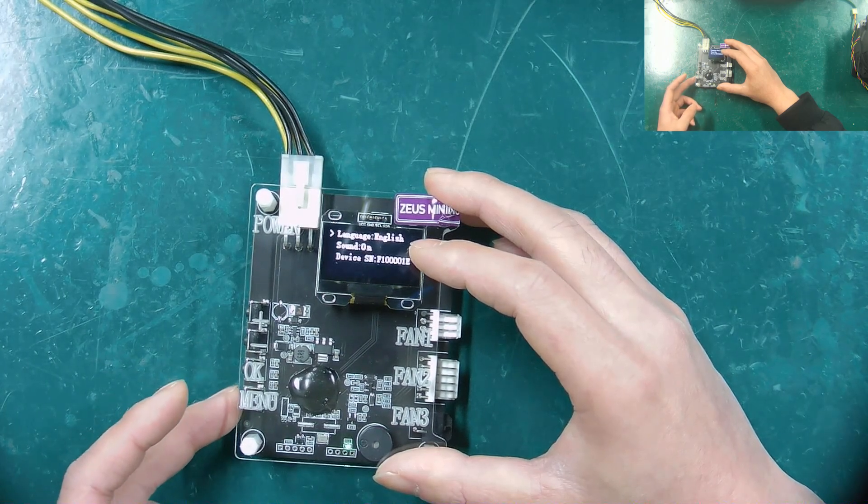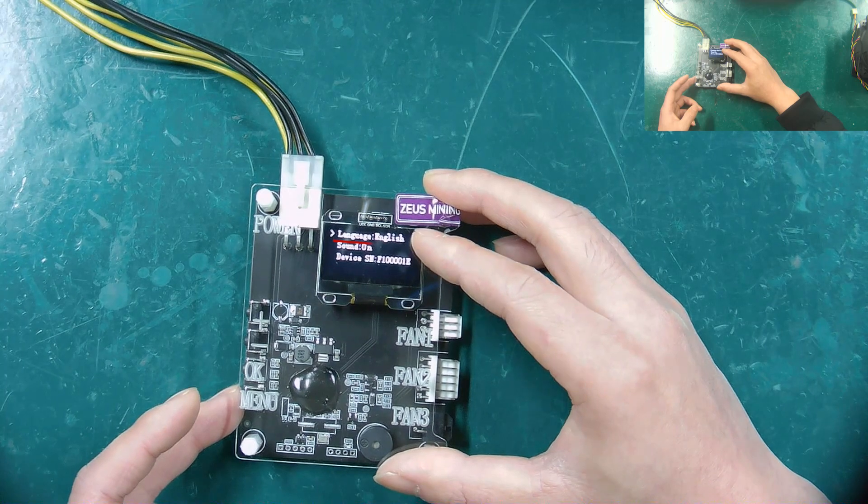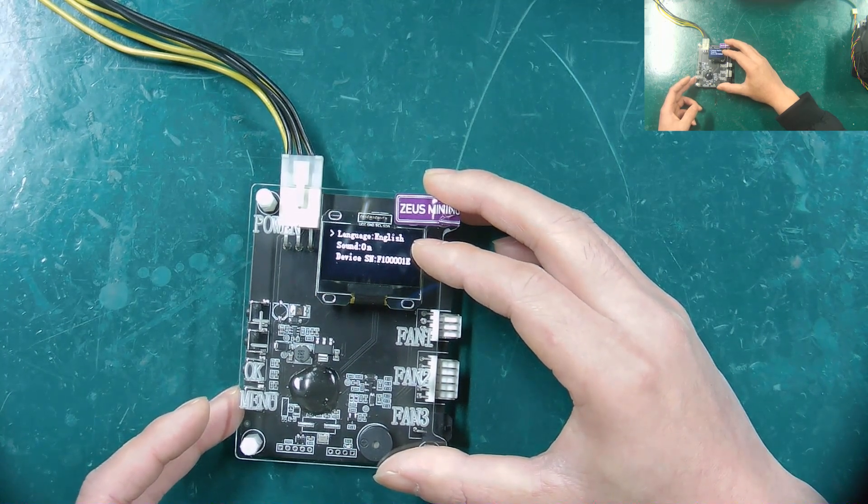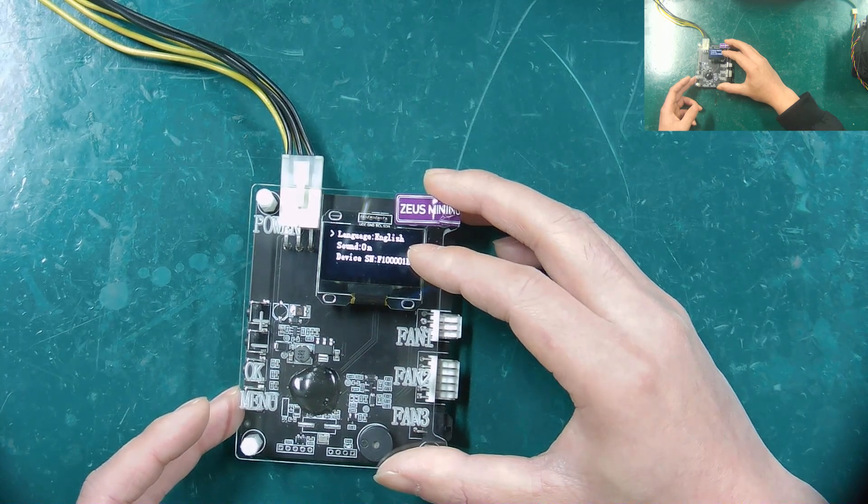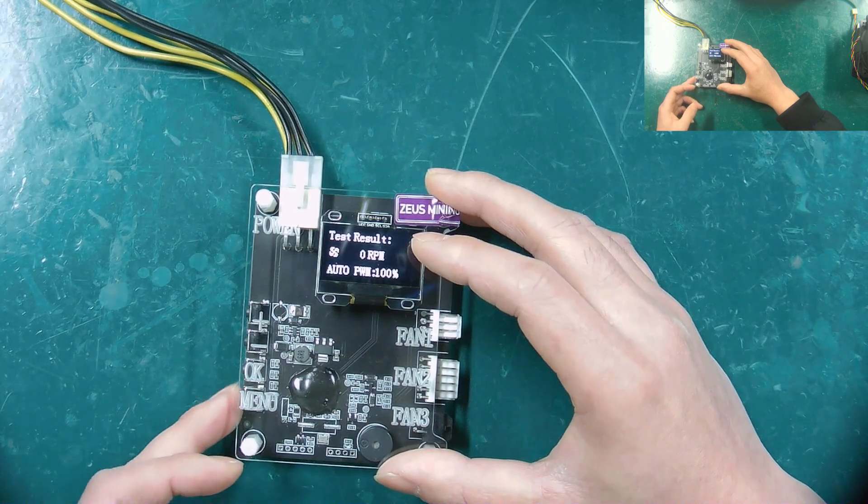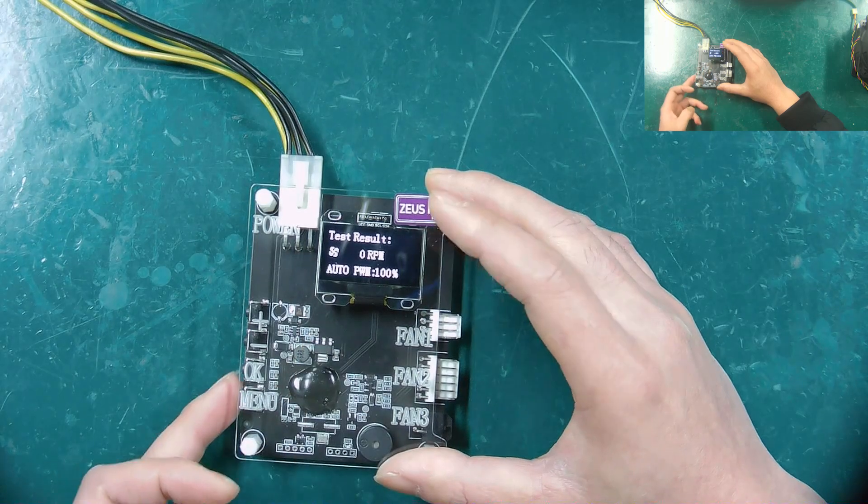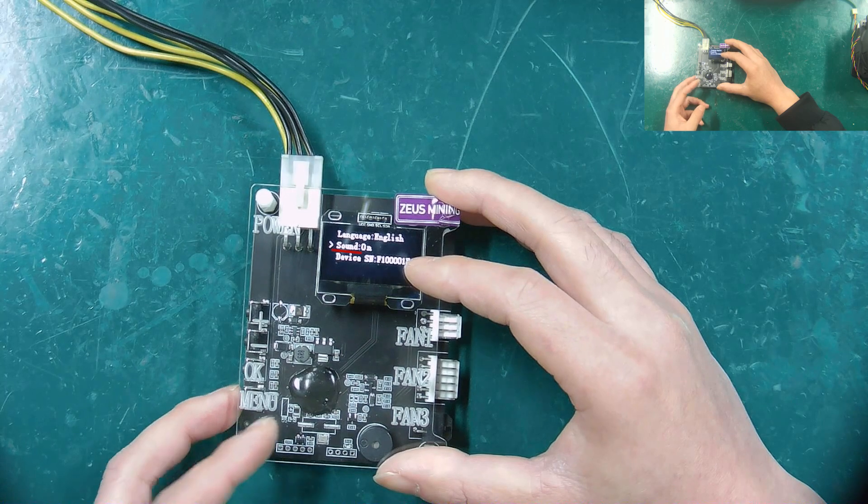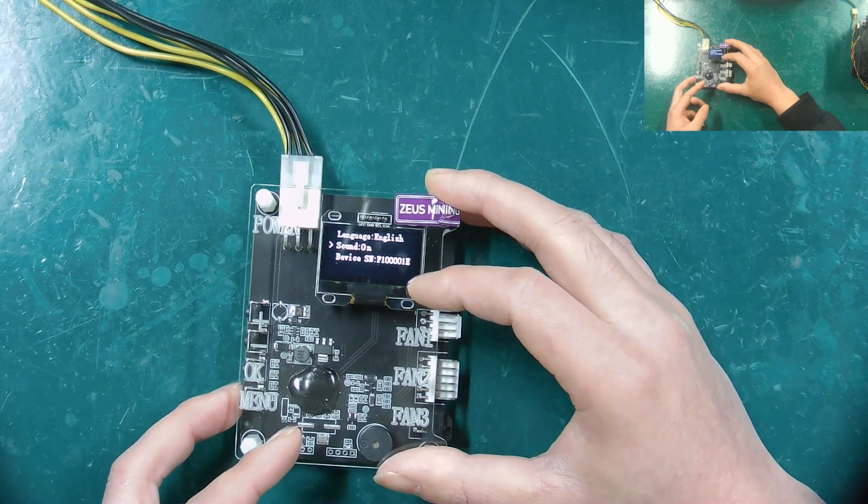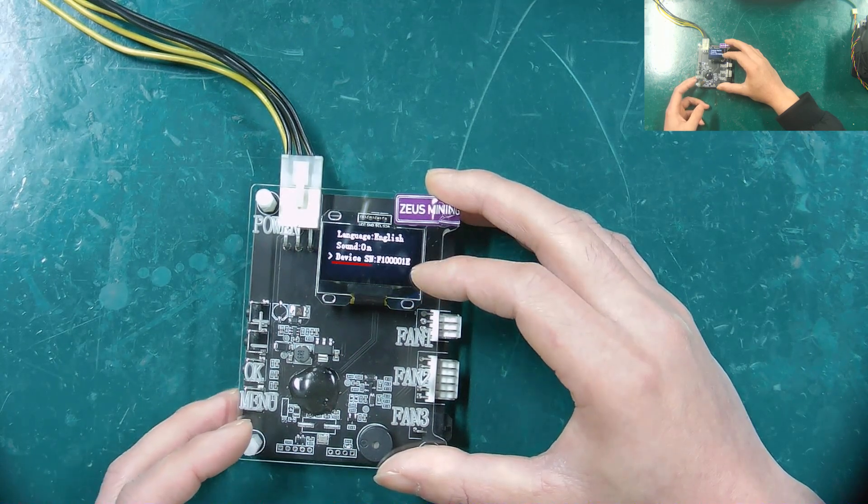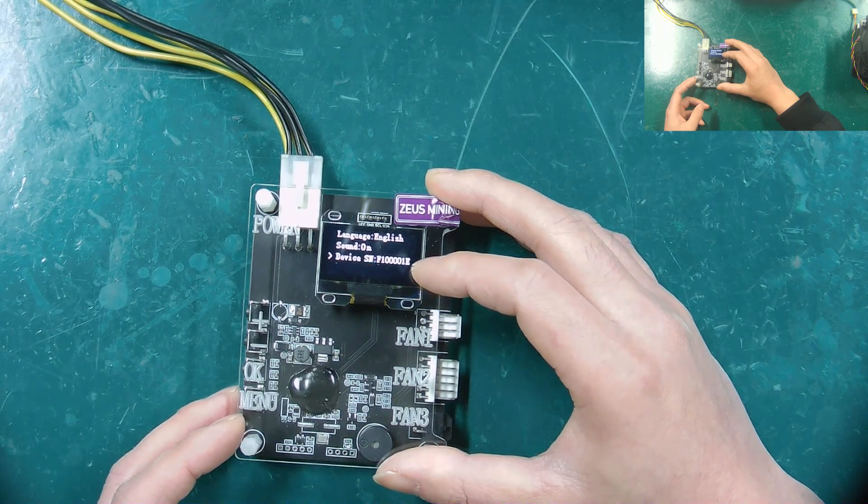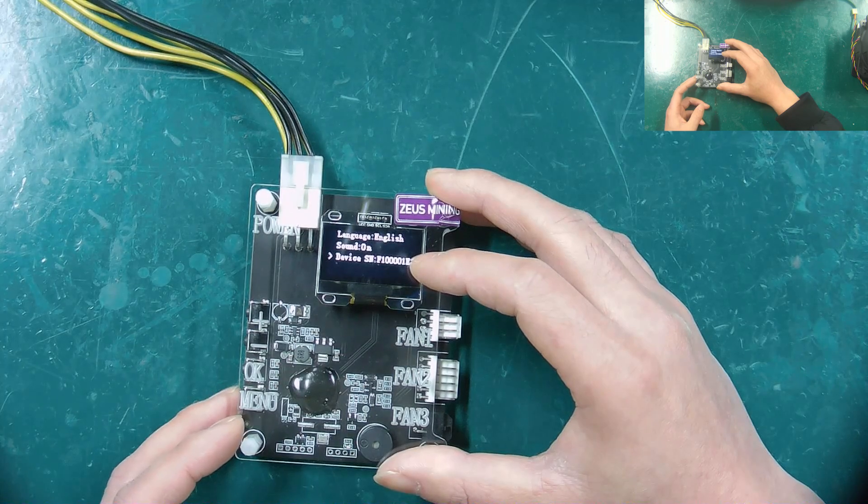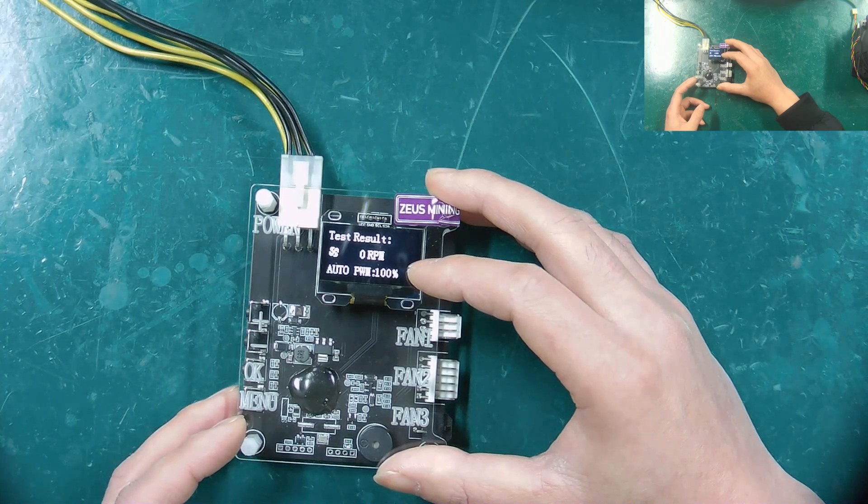Pressing the menu button again, language represents the language setting. This fan tester supports English and Chinese. After setting, you can manually return to the initial page or wait for it to return automatically. Sound represents the voice of the tester, which can be turned off or on. The device SN at the end represents the factory serial number of the tester, and when using the tester, this serial number does not need to be taken into consideration.